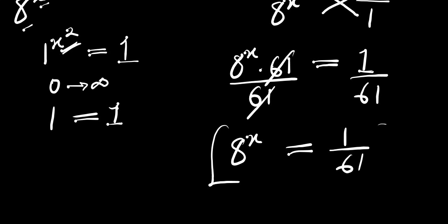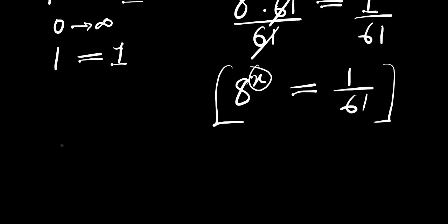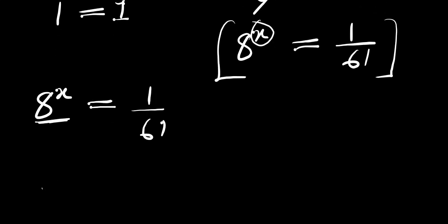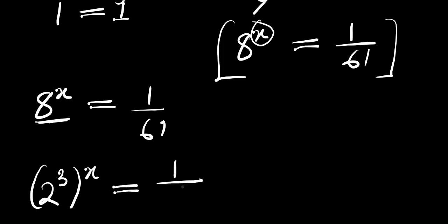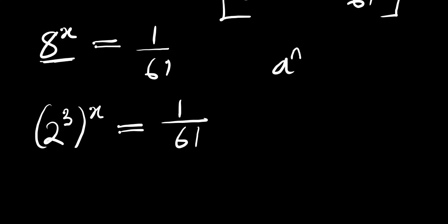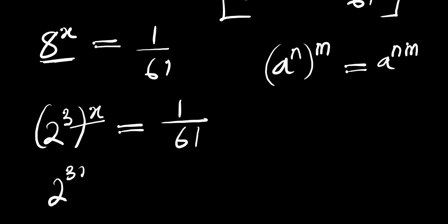Now we need to solve this equation in order to find the value of x. We have 8 to the power of x equals 1 divided by 61. Now we can rewrite 8 to the power of x as 2 to the power of 3, that is 8, all to the power of x. Using the identity (a^n)^m = a^(n×m), we get 2 to the power of 3x equals 1 divided by 61.